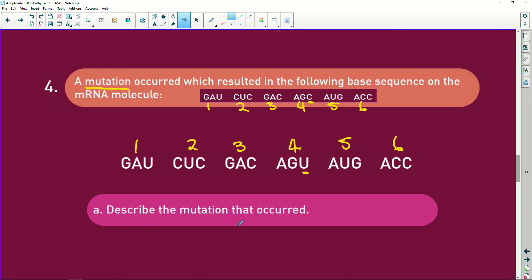So let's just describe the mutation that occurred. Well that's easy. The fourth codon, AGC, has changed.